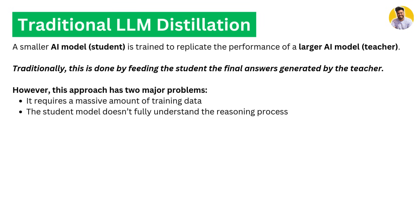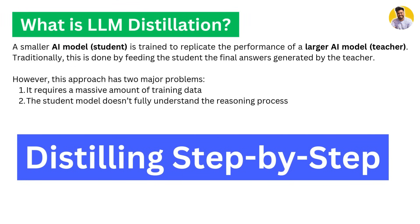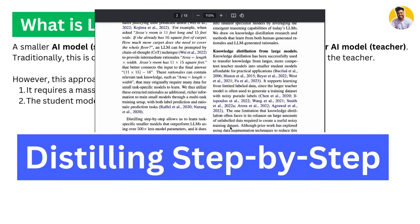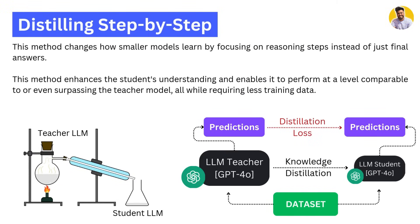This approach has two major problems. The first is it requires a massive amount of training data, and the student does not fully understand the reasoning process behind those answers. That's where the distill step-by-step process comes in. This is the same process that this research paper explains — a method that changes how the smaller language model learns by focusing on the reasoning steps behind the answer instead of the final output. This enhances the student's understanding and enables it to perform at a level comparable to or even surpassing the teacher language model, with less training data.